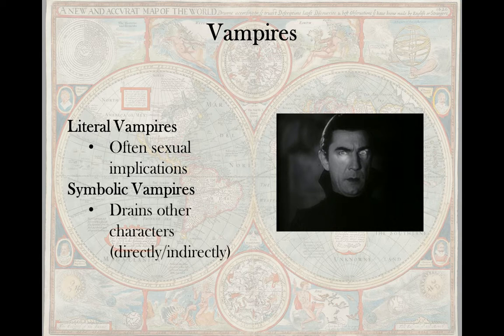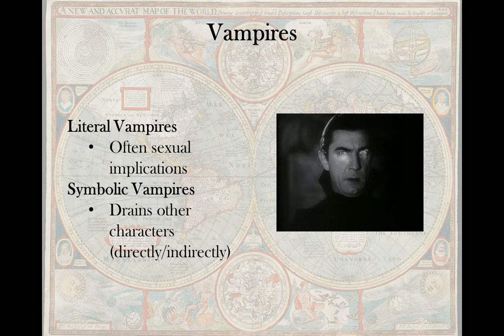We also have symbolic vampires — characters that drain other characters, either directly or indirectly. A symbolic vampire is a negative force within a story; not necessarily the antagonist, but certainly someone who drains the character of life. A good example: in Rip Van Winkle, you could say Dame Van Winkle is a symbolic vampire in the ways she affects Rip Van Winkle. These characters put a wear on the protagonist's success.